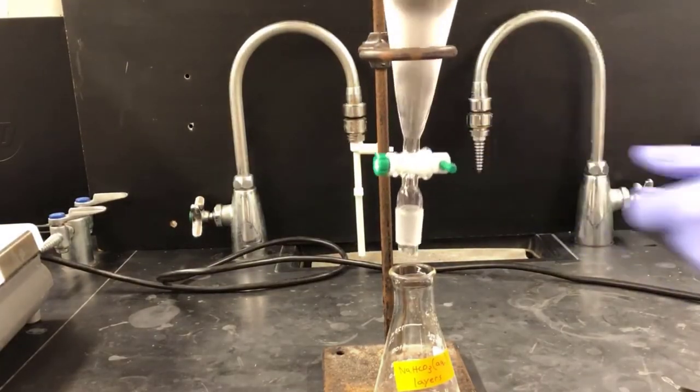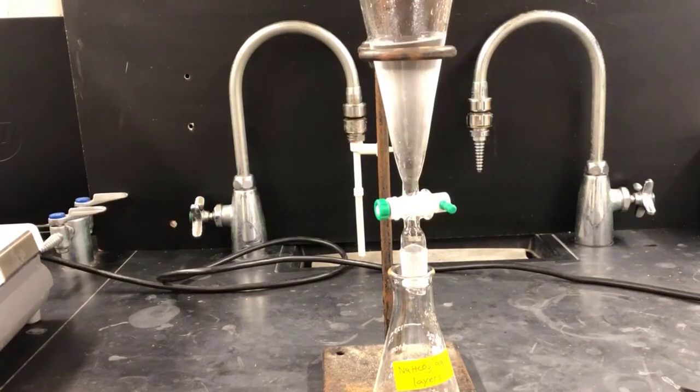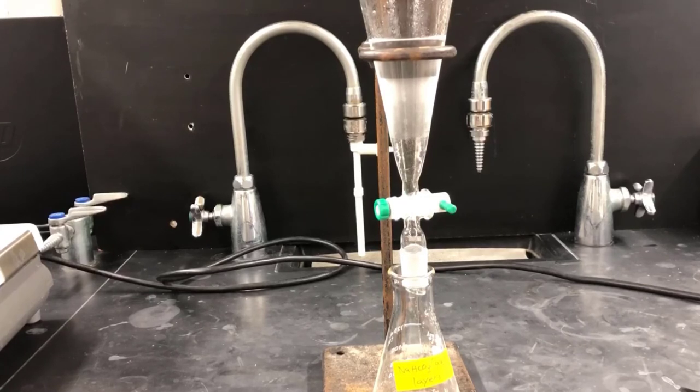When you shake a separatory funnel, you initially have an emulsion. Think of what happens when you take a container of Italian dressing, which is an oil-water mixture, and you shake it. The same thing happens here with the mixture of ethyl acetate and water. As the materials sit in the separatory funnel, they coalesce into two distinct layers. Here you can see the middle emulsion layer giving way to two distinct layers, an upper organic layer and a lower water layer.